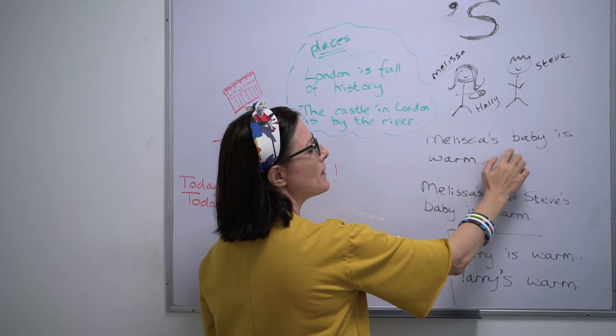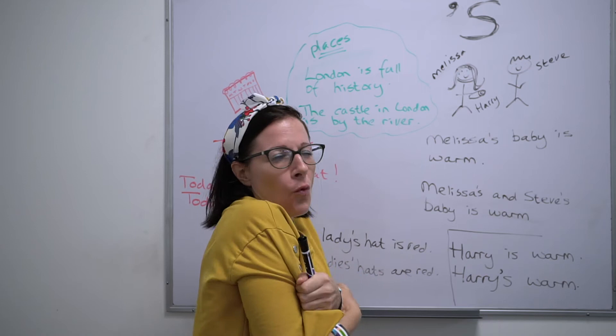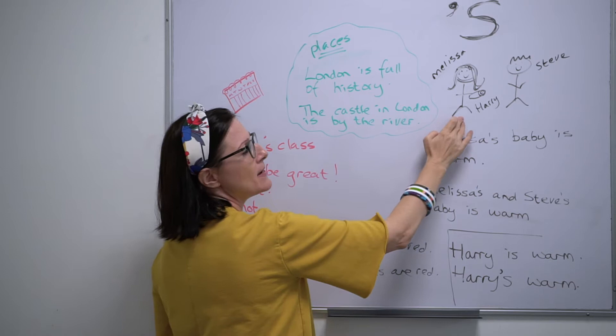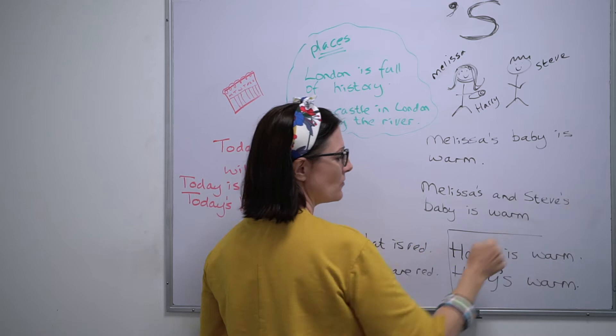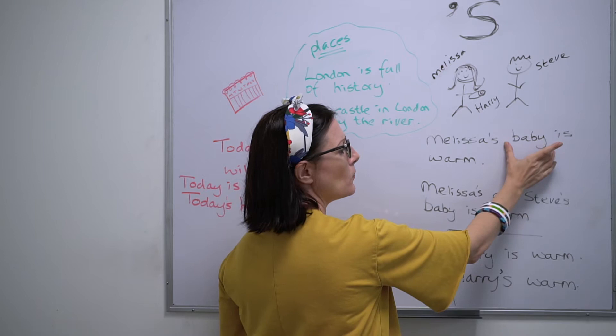Now let's think about a sentence. Let's say 'Melissa's baby is warm.' So they're nice and warm — not hot, but nice and warm because he's all wrapped up. Now the baby is Melissa's baby but it's also Steve's baby as well. So we would say Melissa's — with the apostrophe S — and Steve's — with the apostrophe S — baby is warm.